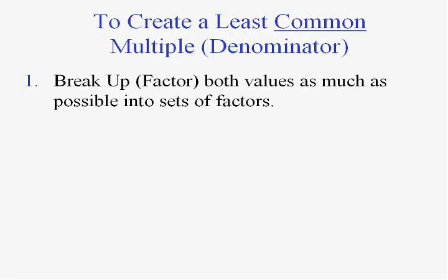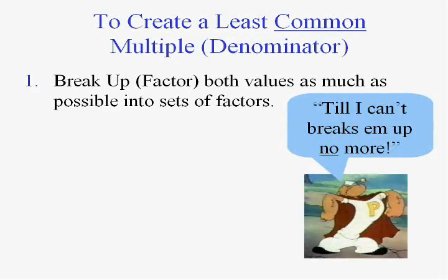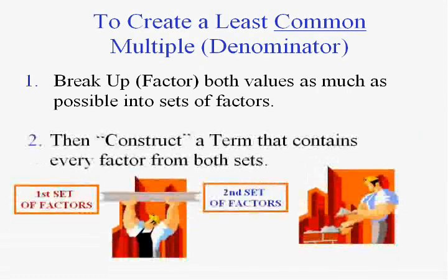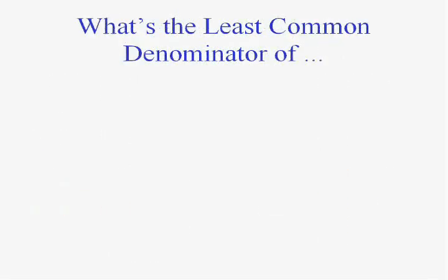Here's what you're going to do. You're going to break each number up — we're going to factor both of the numbers as far as they'll go. We want to use the word prime: factor into its prime factors. And then we're going to actually construct a number that contains every factor from both sets.